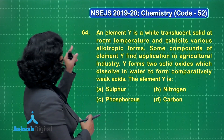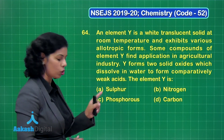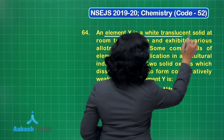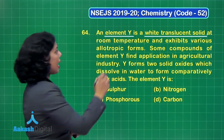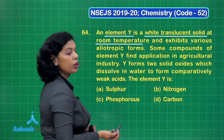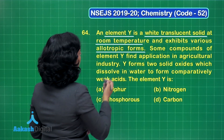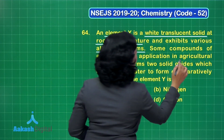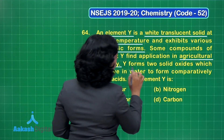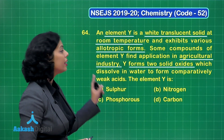Question number 64: element Y is a white translucent solid at room temperature — that is a physical property hint. It exhibits various allotropic forms. Another hint: some compounds of element Y find application in the agricultural industry.